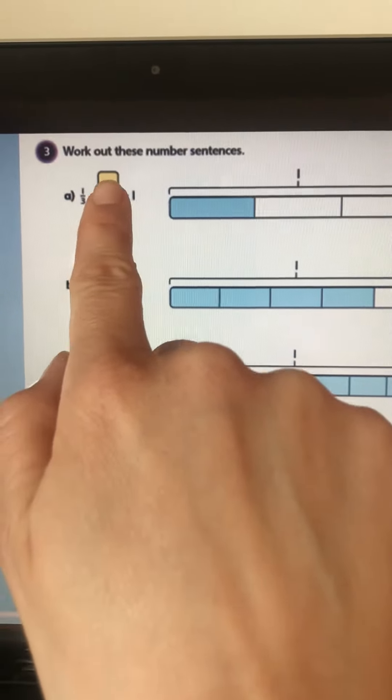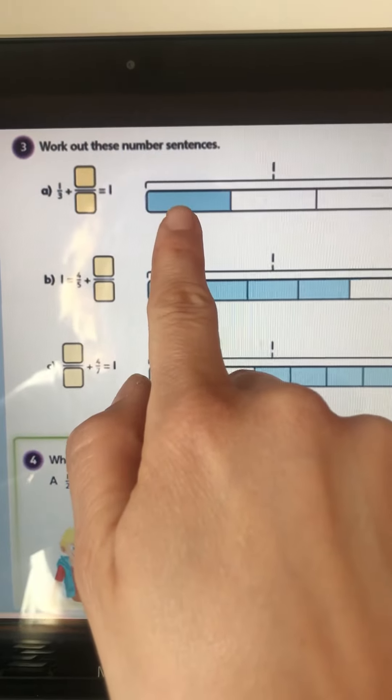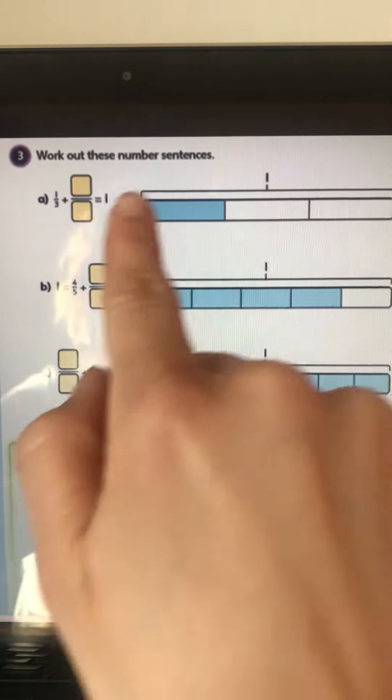So here it says one third plus what equals one, and it's colored in the first part for you, so that's one third. So what is left to create one?